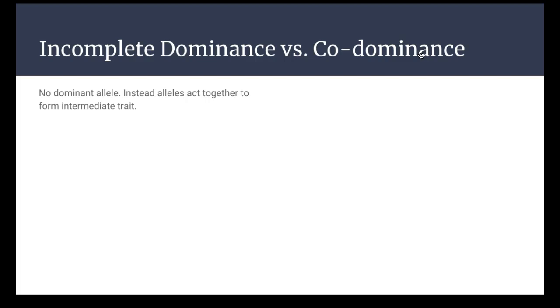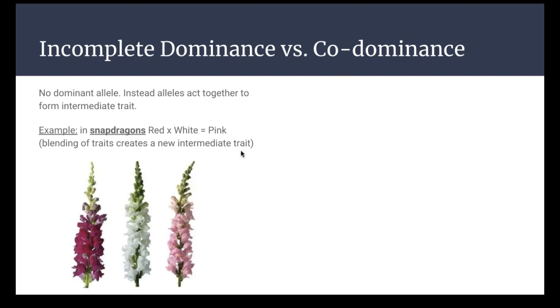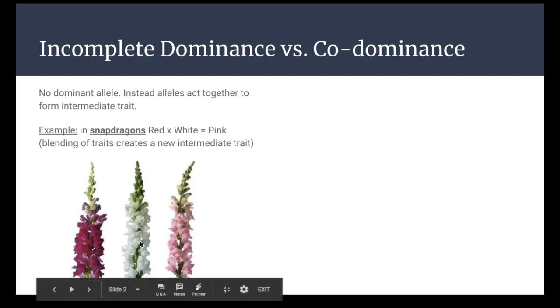I think about when I'm mixing paint in this example. If I was going to take red paint and white paint and mix them together, it would make pink paint, which is a whole new color. So my example here, I talk about snapdragons, which is a type of flower. You can actually have red snapdragons and you mix them with white snapdragons and you create a pink snapdragon. So these are what snapdragons look like - the red ones, the pink ones, the white ones.